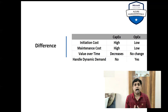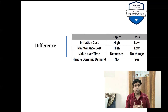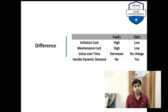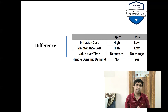The last difference is handling dynamic demands. If your demand is high, you can get more infrastructure on OPEX. If demand is low, you can scale it down. So you can adjust based on your demand on the OPEX side, but you cannot do that on the CAPEX side.